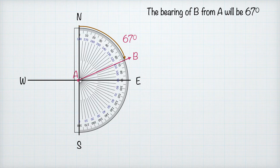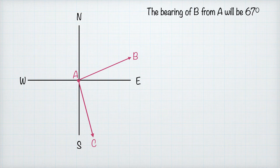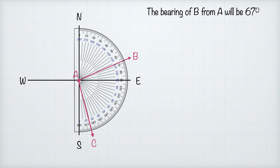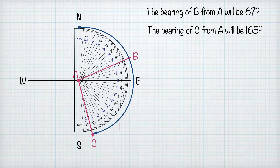With bearing we say 'the bearing of B from A,' whereas with direction we said 'from A to B.' The point we say 'from' is where we place the protractor. So in each example we're measuring from A. For point C, we draw the line joining A and C, place the protractor the same way, measure clockwise from north, and that gives us 165 degrees.